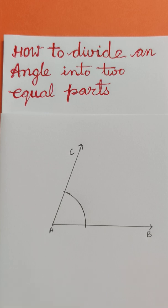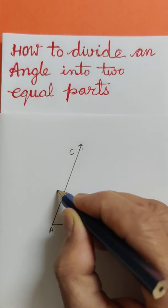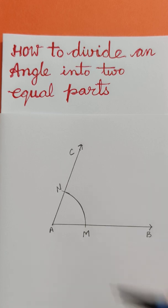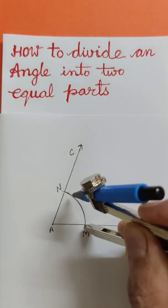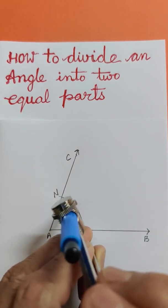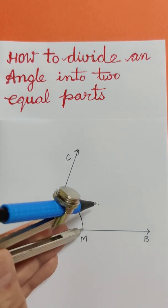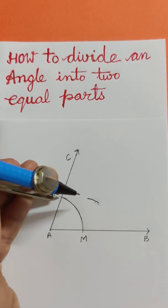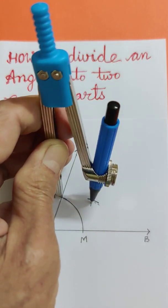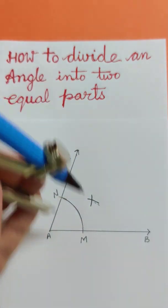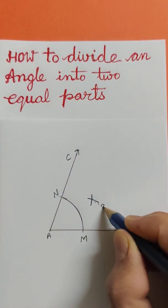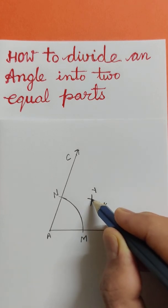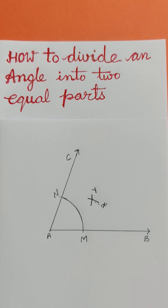Write the name M and N. Now taking M as the center, with a distance more than half of MN, we shall draw an arc like this. Then putting the needle at N, draw an arc like this — suppose it is X and Y. The arcs X and Y are intersecting at this point. We shall join this point to A and draw a ray.